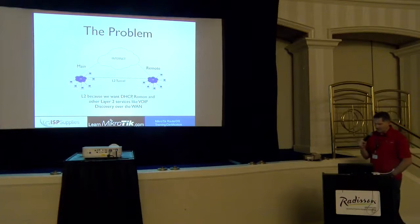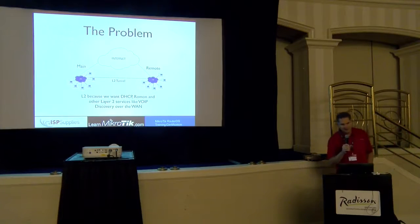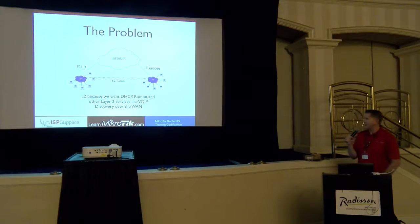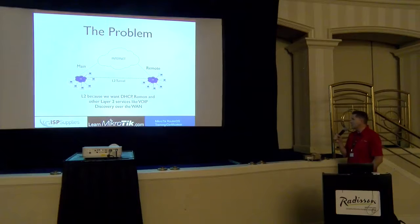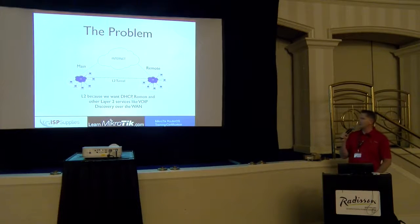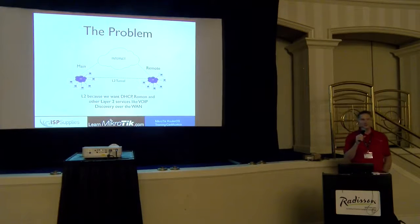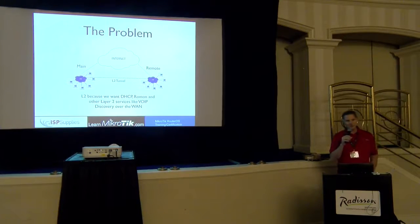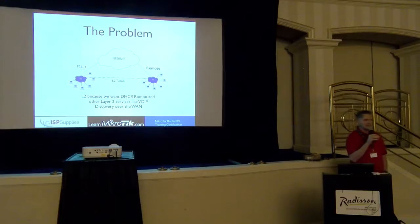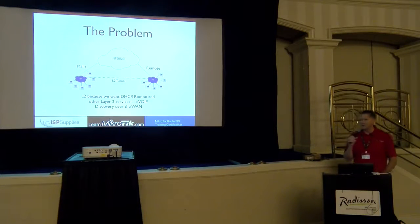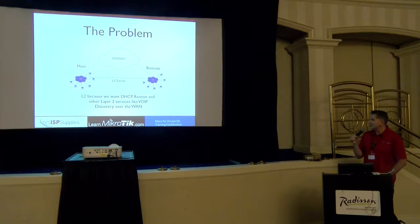The problem is multiple locations that are separated by some kind of internet connectivity — maybe a cable modem, maybe fiber on one end. It doesn't really matter. But we want to create a Layer 2 tunnel between the two locations. I want to show you a way that is actually quite easy — even easier than the old EOIP tunnels I used to use, and it gives you a lot of advantages.